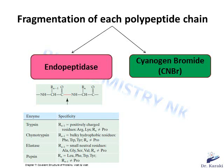Chymotrypsin cleaves at the carboxyl end of aromatic amino acids like phenylalanine, tyrosine, and tryptophan, provided the next amino acid is not proline. Elastase cleaves at the carboxyl end of small neutral amino acids like alanine, glycine, valine, and serine, provided the next amino acid is not proline. Pepsin is different from the other endopeptidases: it cleaves at the amino end — before leucine, phenylalanine, tyrosine, and tryptophan — provided the amino acid preceding it is not proline.